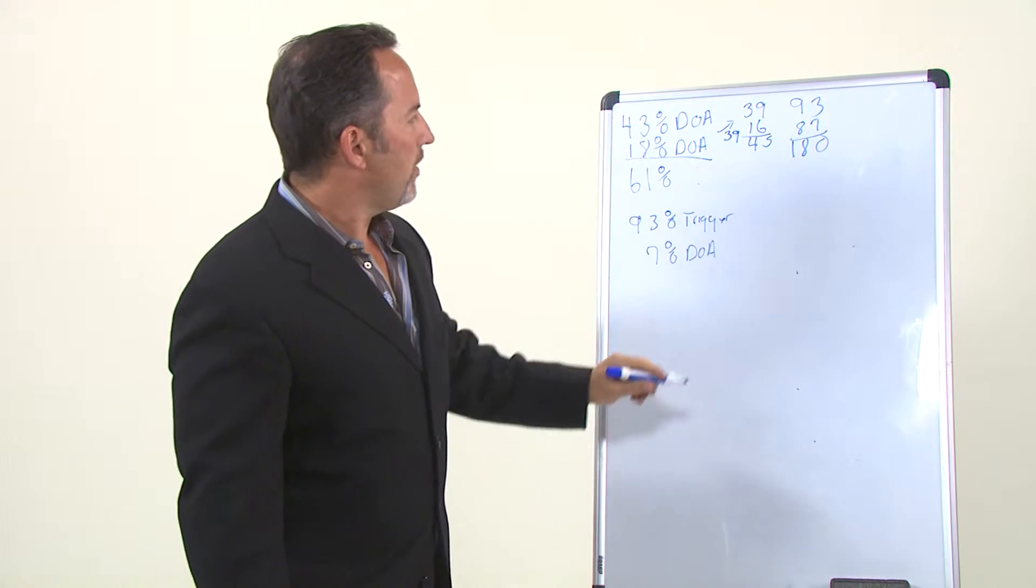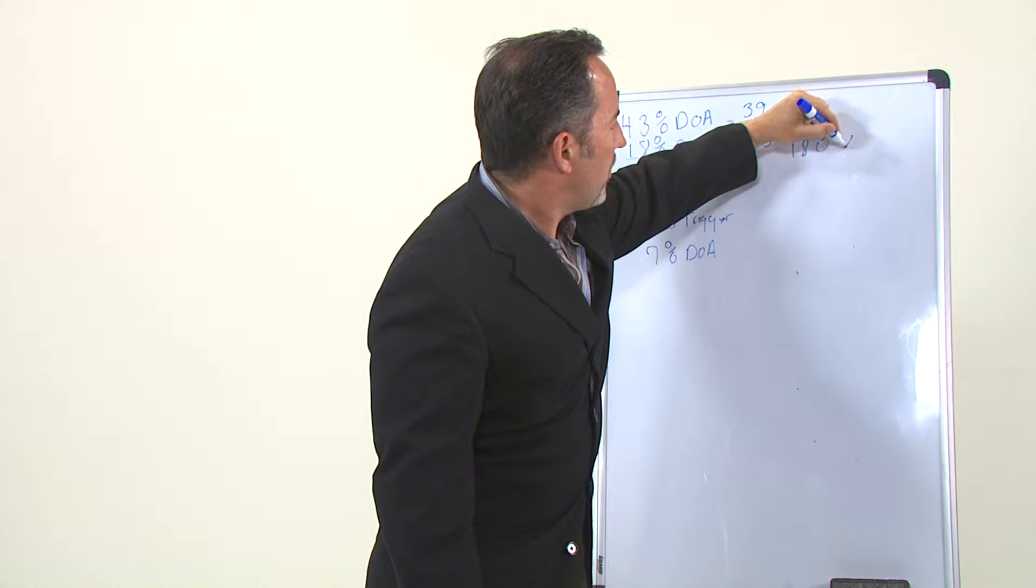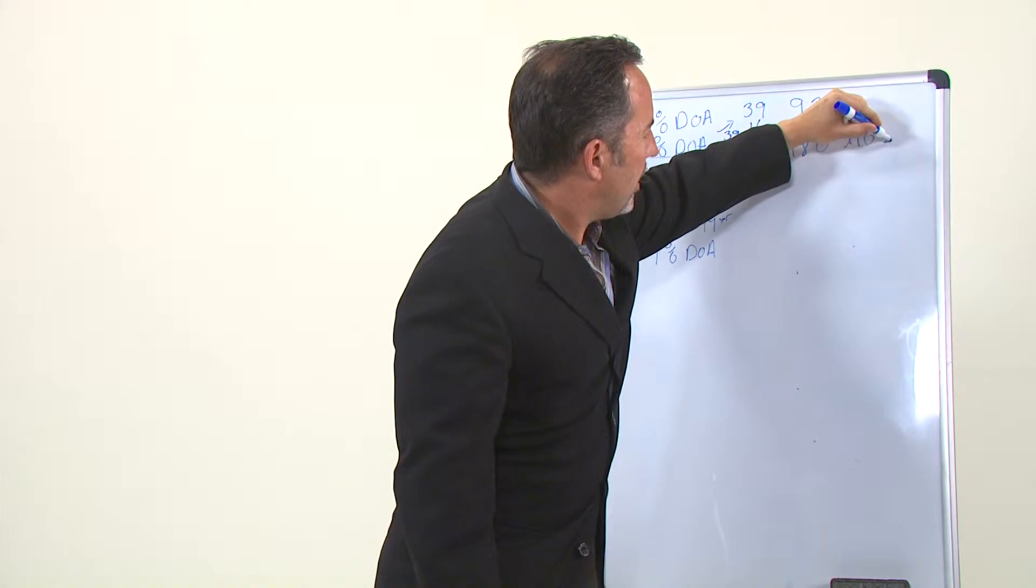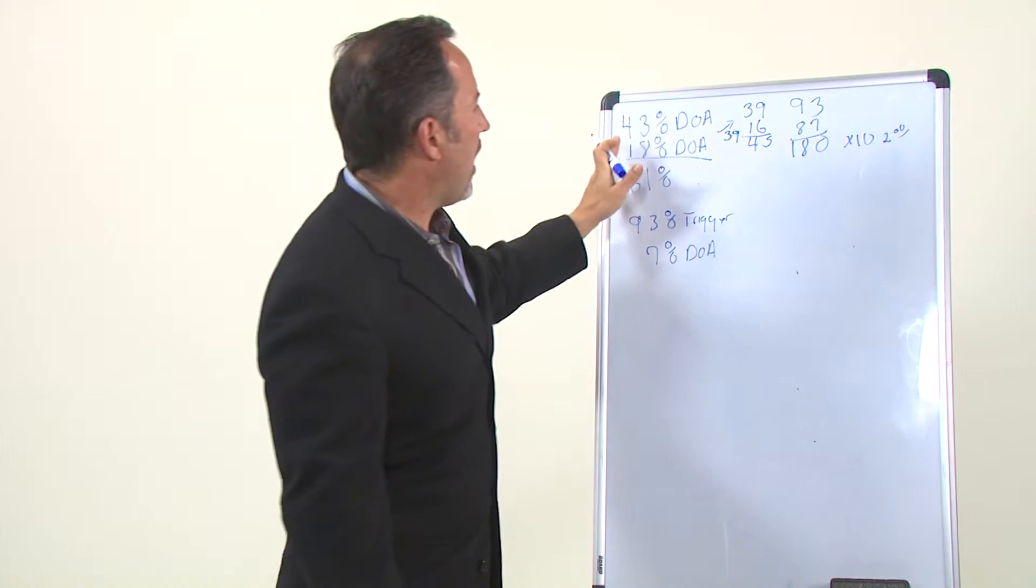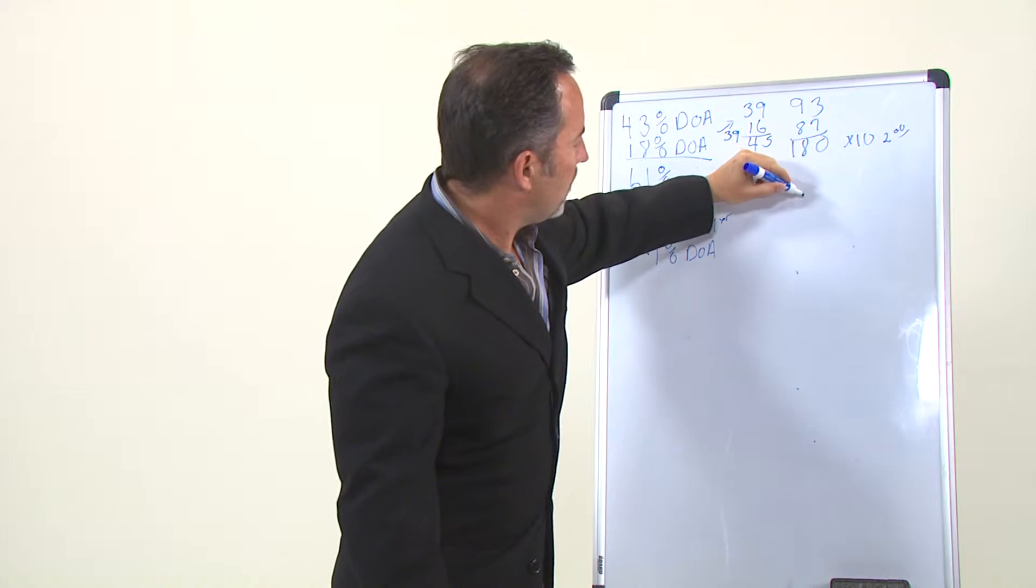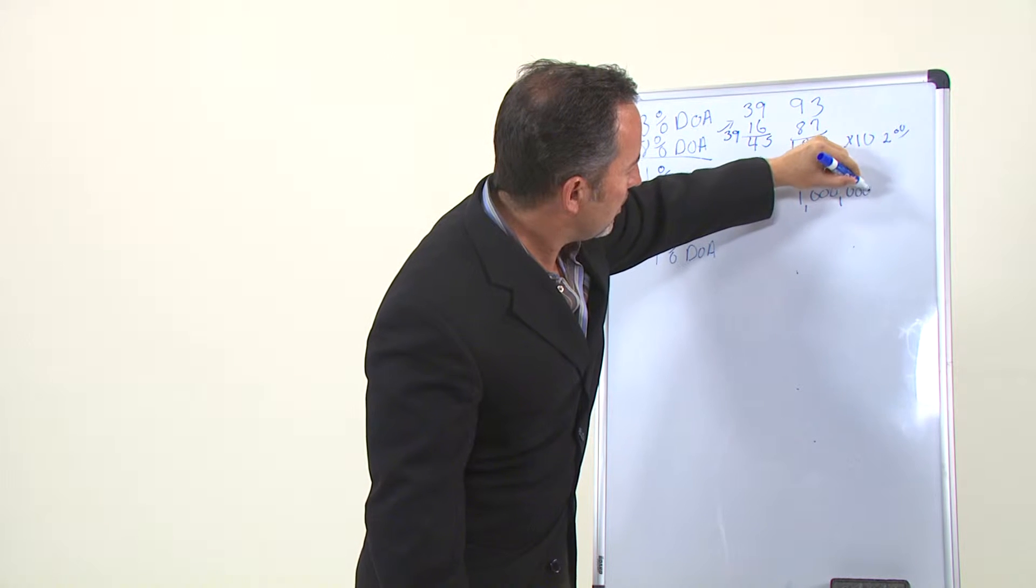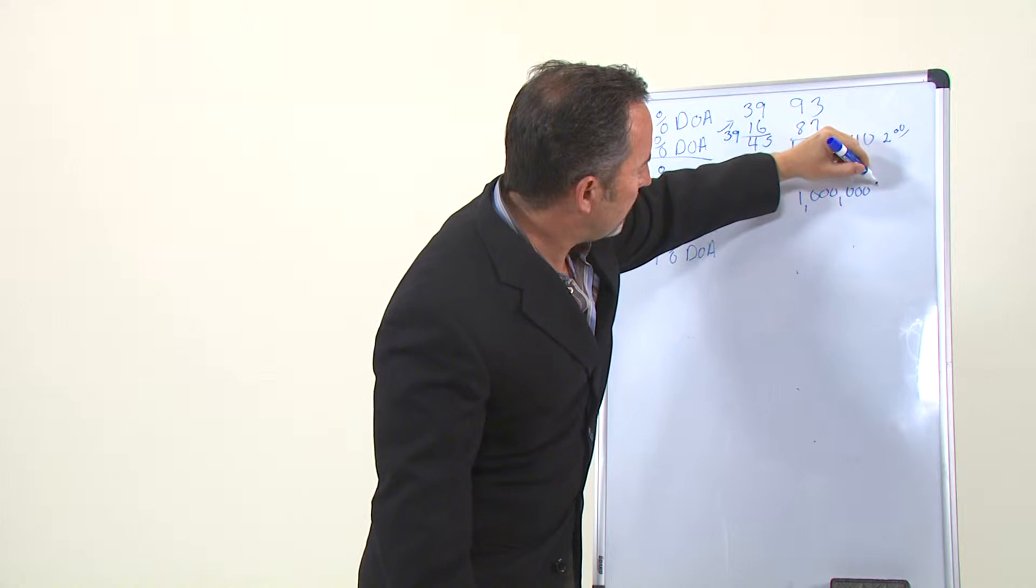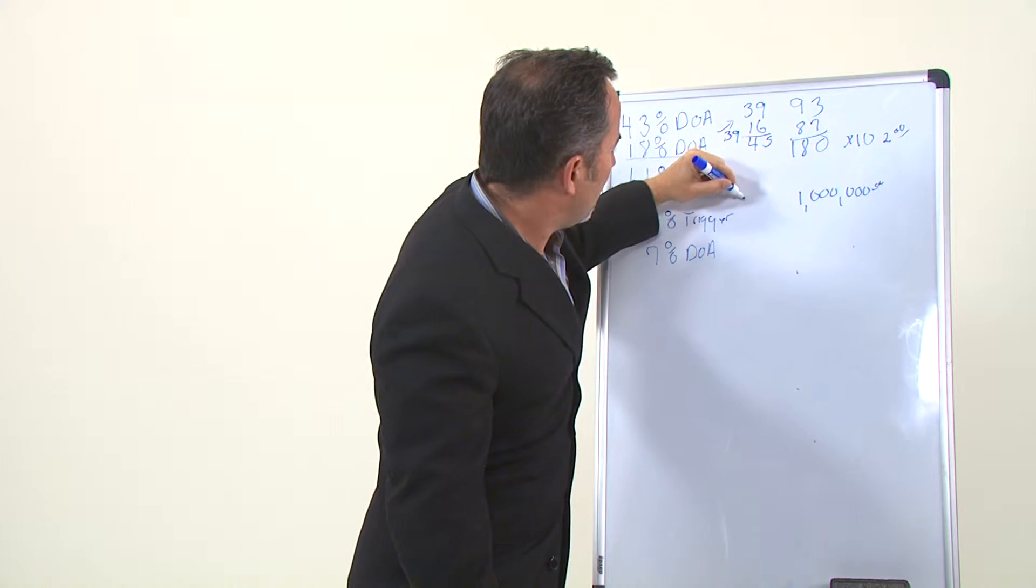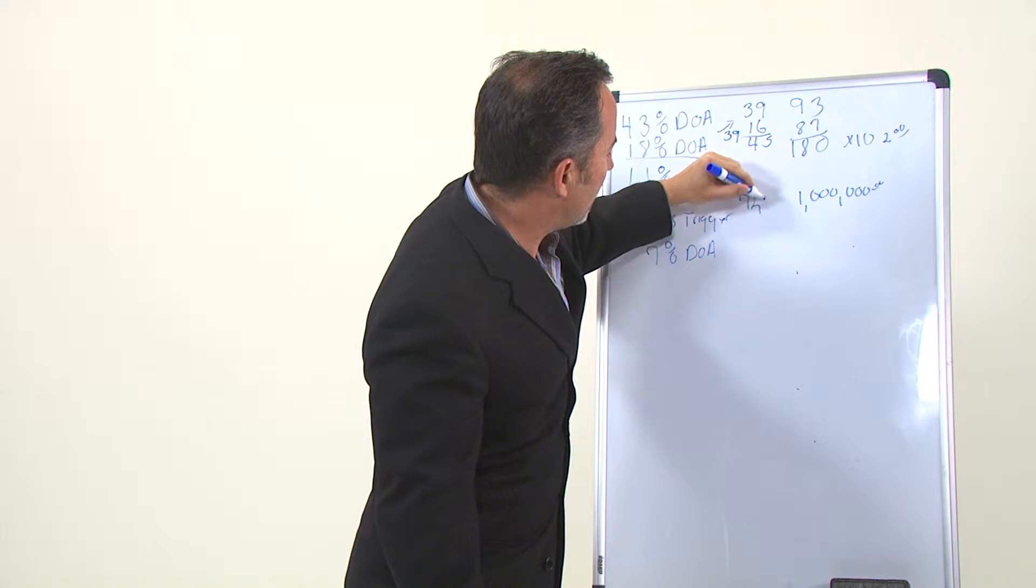If you took each one of these and said each one of them went out and got 10 customers, got $2 each, and you followed this breakage all the way down, this one would hit $1 million. That's such a big number, I don't even know if I can write it. When this one was right at $72,000.